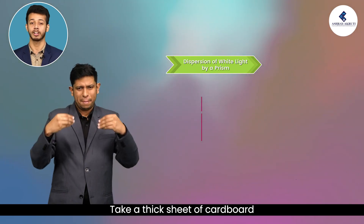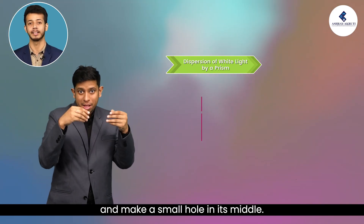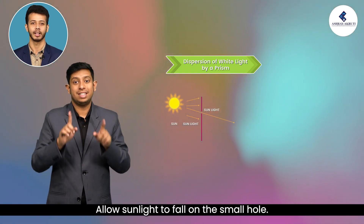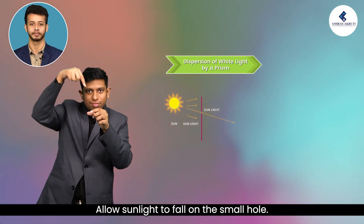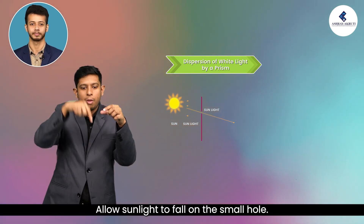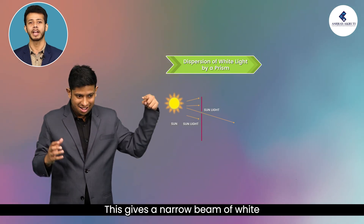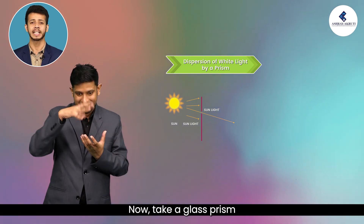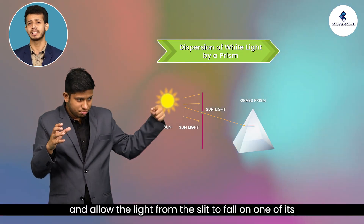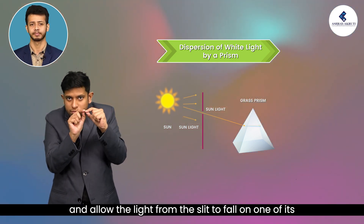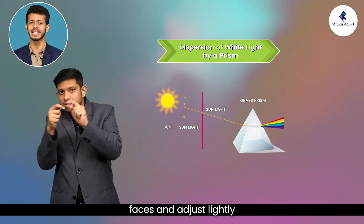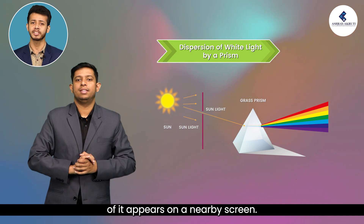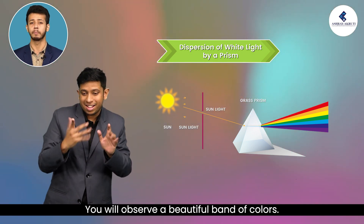Take a thick sheet of cardboard and make a small hole in its middle. Allow sunlight to fall on this small hole — this gives a narrow beam of white light. Now take a glass prism and allow the light from the slit to fall on one of its faces and adjust slightly until the light coming out appears on a nearby screen. You will observe a beautiful band of colours.